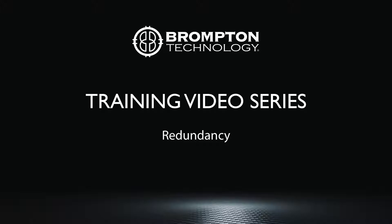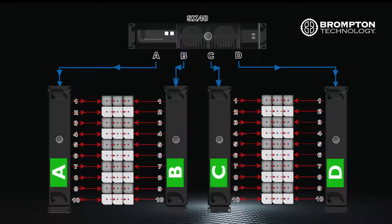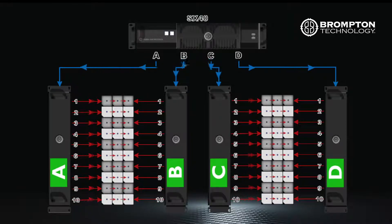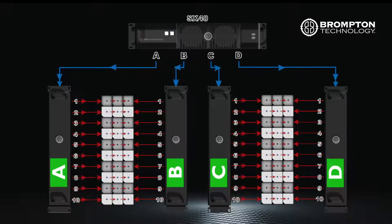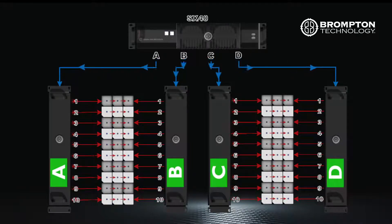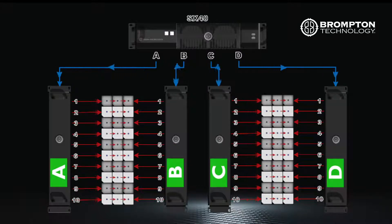Let's start with closed loop redundancy. This is where the capacity of your processor is halved as you are coming out of port 1 on a processor with 1GB ports, or out of a 10GB trunk to an XD like on the SX40. This goes to your panels, and then when you have reached the last panel in your string, this either returns to port 2 or the corresponding port on your second XD and then to trunk B. The same applies to port 3 returning to port 4, or trunk C returning to trunk D on the SX40.